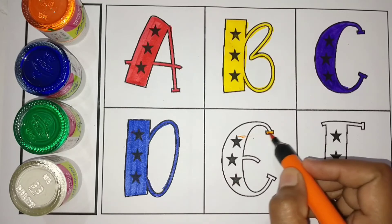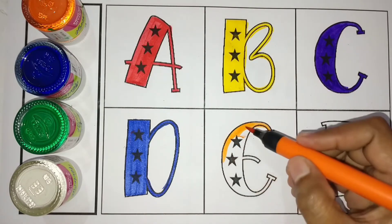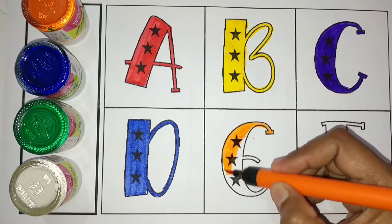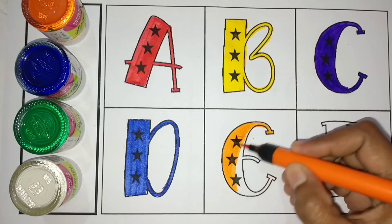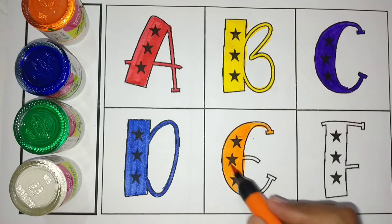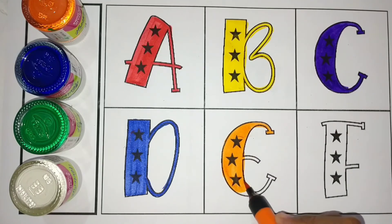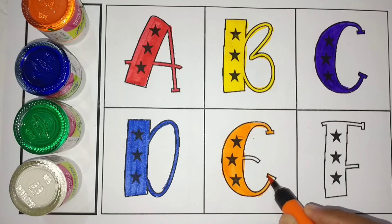Orange color, E, E for Elephant. E, E for Elephant. Elephant means Hathi. E, E, Orange color, E.